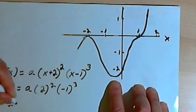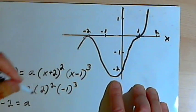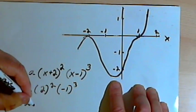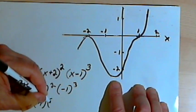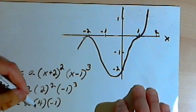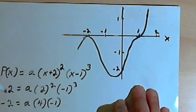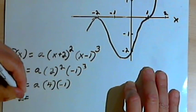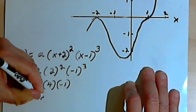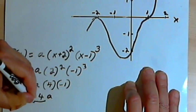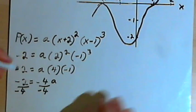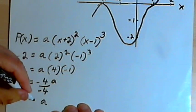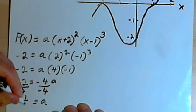So I've got negative 2 equals a. 2 squared is 4. So that's a times 4. And negative 1 to the third power is negative 1. So I'm going to have negative 2 equals negative 4a. I'll divide both sides by negative 4. And I'm going to have a equals 1 half.